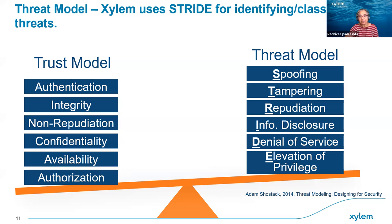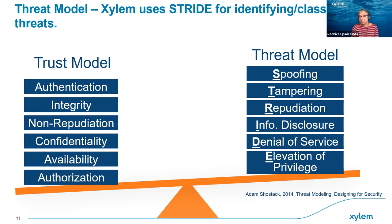Now that we have a data flow diagram, we can do a threat model. This involves identifying threats in a structured way and listing the security controls that address them. The threats we see are based on the STRIDE model, which stands for Spoofing, Tampering, Repudiation, Information Disclosure, Denial of Service, and Elevation of Privilege. We don't have to use STRIDE — it could be MITRE's Common Weakness Enumeration, CWE, or MITRE ATT&CK framework or anything else. STRIDE is just one way of standardizing the process.